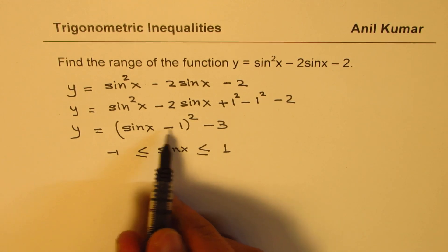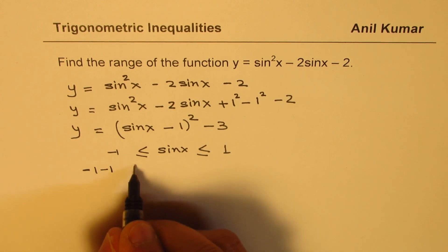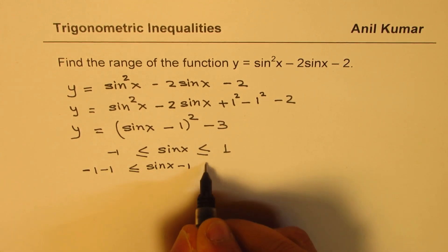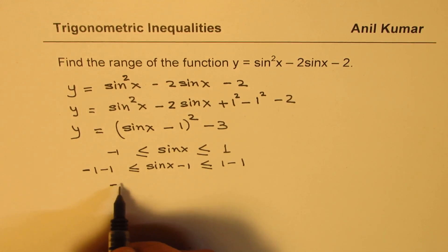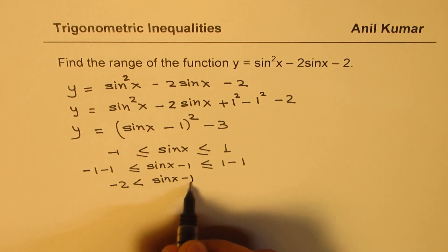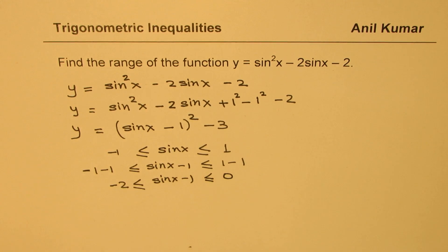Now if I add minus 1 in all these then I get minus 1 minus 1 is less than or equal to sine x minus 1, which is less than or equal to 1 minus 1. So I get minus 2 less than or equal to sine x minus 1, and here I get 0.